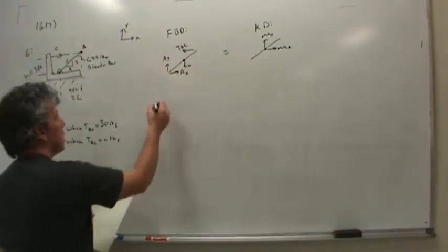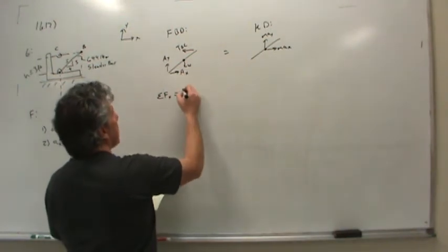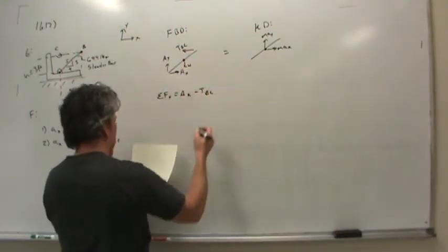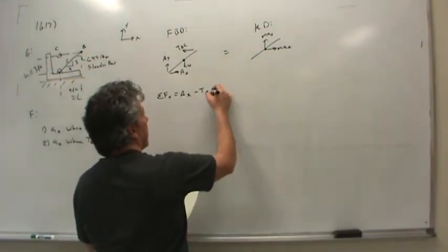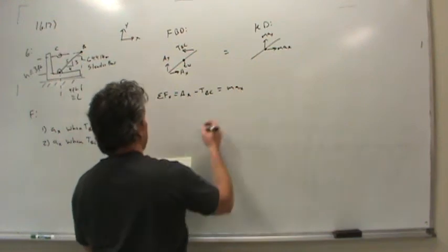So now it's all set up. Let's sum forces in the X direction to start. I see AX and I see the tension in the cable, so minus TBC, that's equal to the mass times acceleration in the X direction.